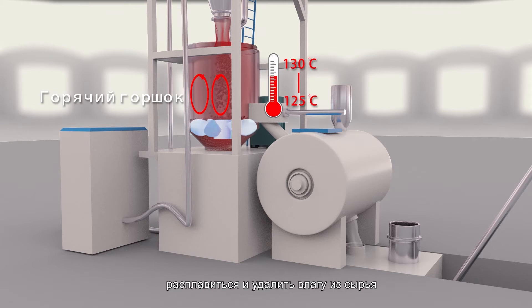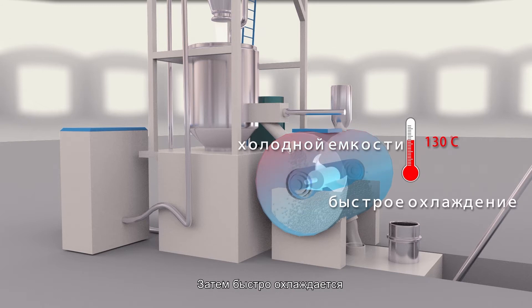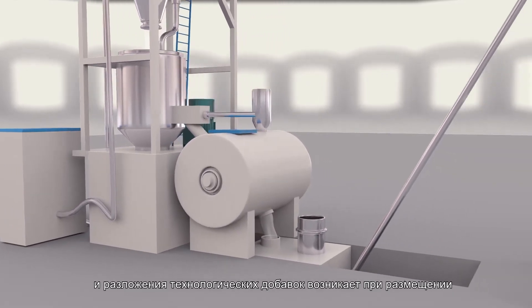Temperature is raised from 125 degrees centigrade to 130 degrees centigrade, which will make the processing aids melt and water vapor be removed from the raw materials so that the raw materials can meet the requirements of use. After that, rapid cooling is carried out to prevent any occurrence of problems such as plasticizing in advance or volatilization and decomposition of processing aids.